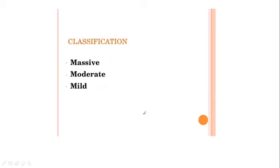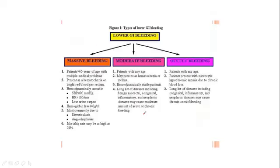Lower GI bleeding is classified as massive, moderate, and occult. You can see in this chart: massive bleeding, moderate bleeding, and occult bleeding.